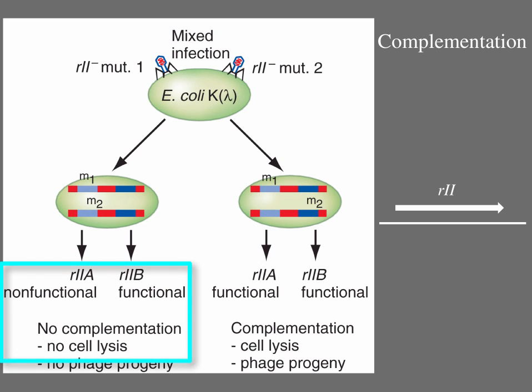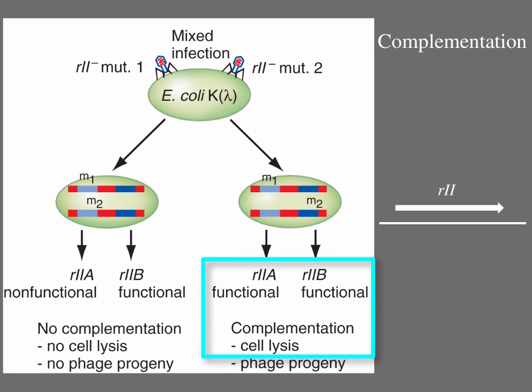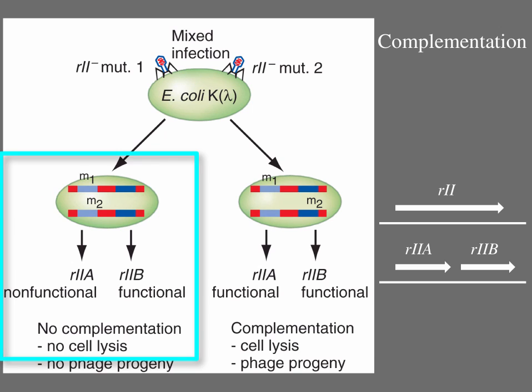However, Benzer found that some mutant pairs were able to lyse E. coli K. The phage in these pairs must have had mutations in different genes. Co-infected R2 mutant pairs that had mutations in the same gene, here R2A, could not make A protein. These co-infections did not result in complementation. No lysis of E. coli K happened because both A and B proteins are required for lysis and neither R2 mutant phage introduced a functional A gene. Other pairs where both strains had mutations in the B gene similarly failed to complement.